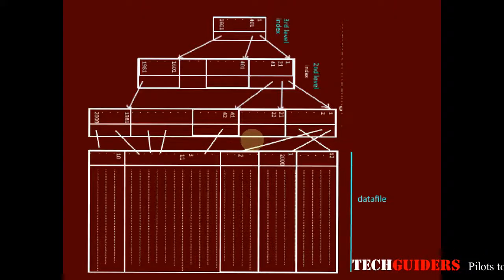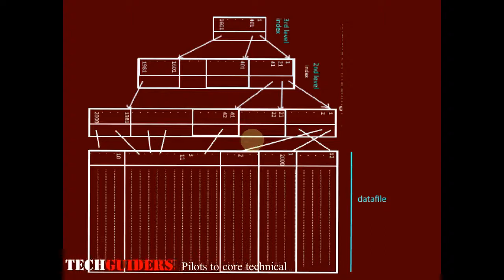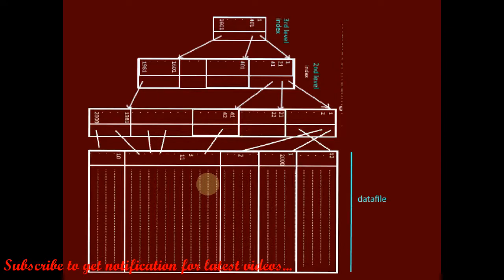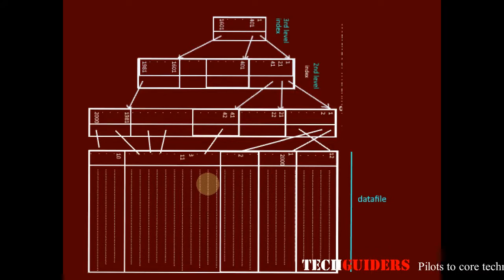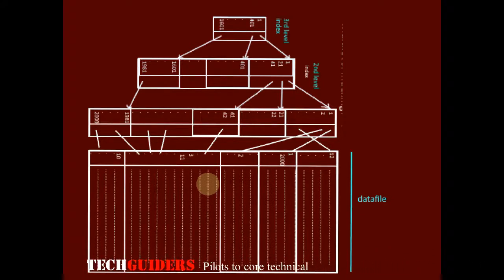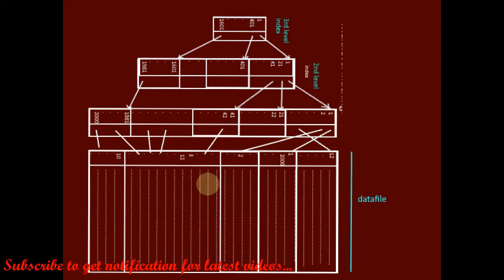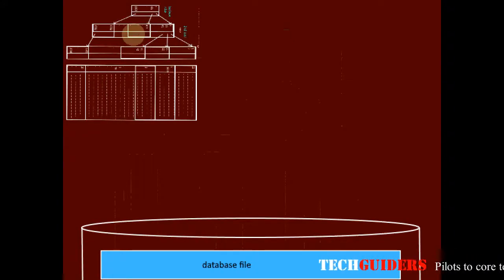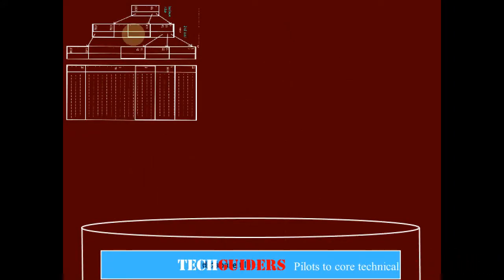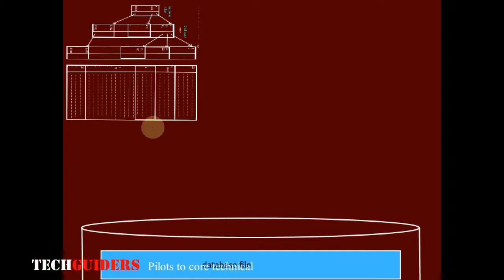B-trees and B-plus-trees are the structures used to implement the dynamic multilevel index. We will first learn indexing using B-plus-tree, because B-plus-tree is more alike the multilevel index. After that we shall see B-tree indexing in DBMS. Keep in mind the structure of the multilevel index so that we can easily follow the structure and properties of the B-plus-tree.